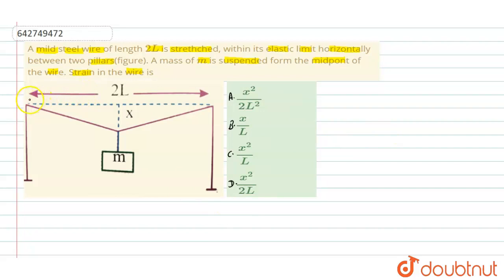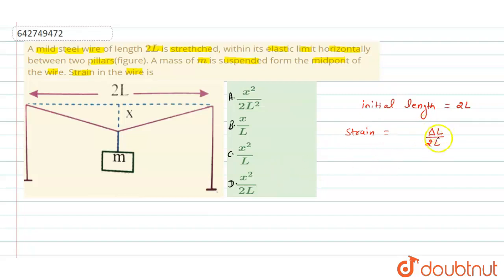From the question, the initial length of the wire is equal to 2L. We know that strain equals change in length divided by initial length, that is 2L. We need to find the total length after stretching. The midpoint is O; the distance from each pillar to the midpoint is L. With the wire deflected by x at the midpoint, we apply the Pythagorean theorem.